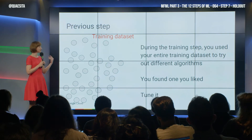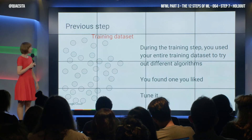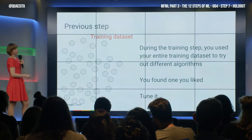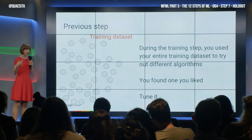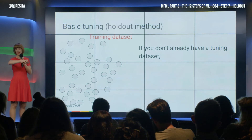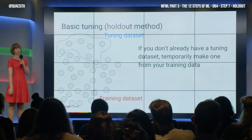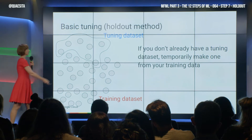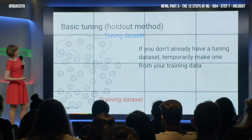If you have a very simple setting with one hyperparameter, what you can do is this. You take your training dataset — and say you didn't have a dataset withheld for tuning — you take one out. There's your fourth dataset. This is your new training dataset, and that's your tuning dataset.